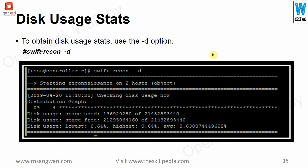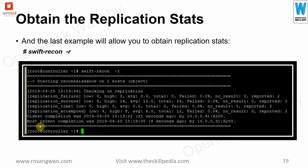For disk usage statistics, use `swift-recon -d`, which provides disk usage stats including lowest, highest, and average usage, and how much space is used across all disks. For replication statistics, use `swift-recon -r` to get replication status across your distributed disks, where your objects and containers are stored.